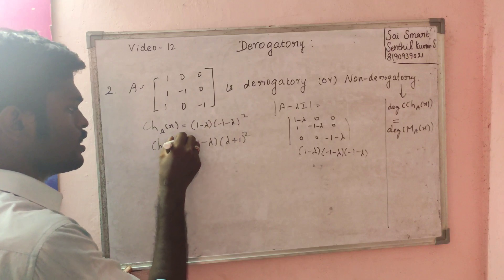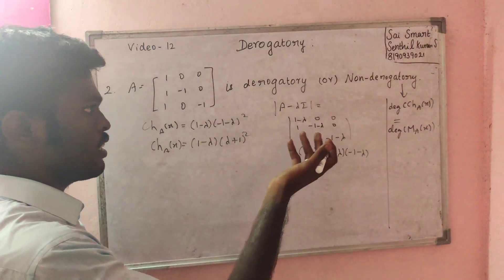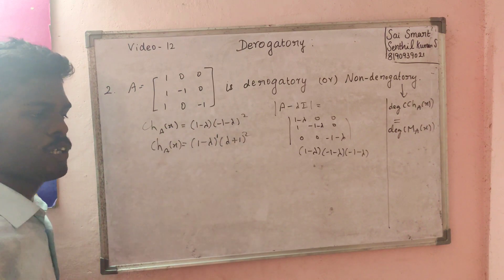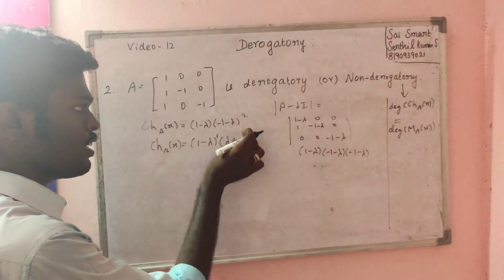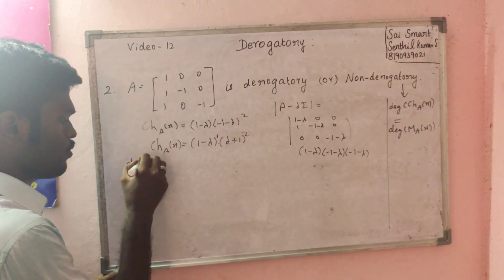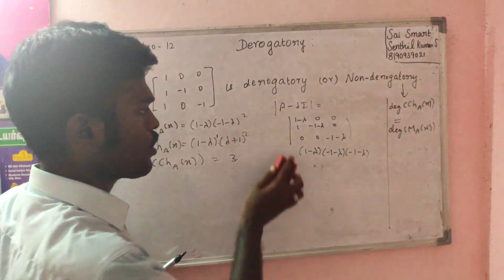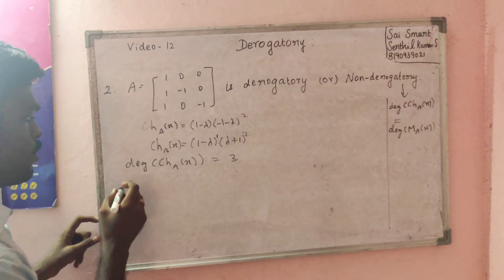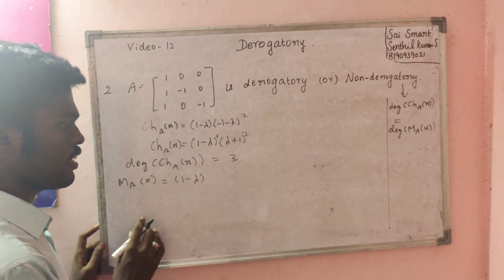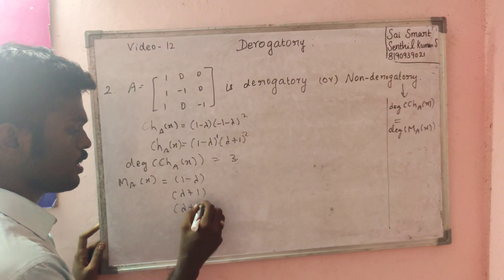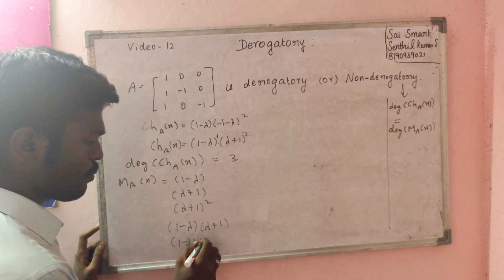This is the characteristic polynomial. The degree of this characteristic polynomial is 1 plus 2 equals 3, since it is a 3 by 3 matrix. So the degree of the characteristic polynomial Ch_A(x) equals 3.